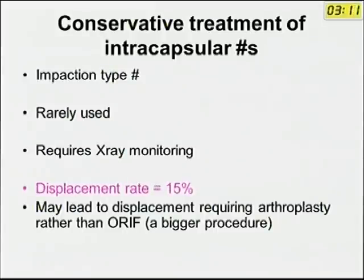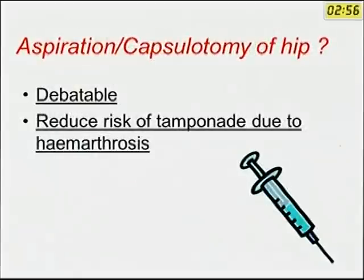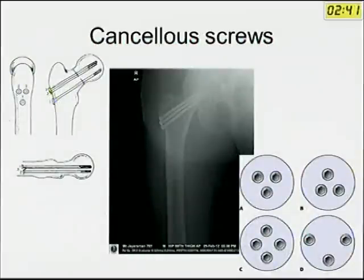Regarding conservative treatment of intracapsular fractures, nowadays it is better not to go for conservative measures. Though rarely used, the displacement rate even in impacted fractures has been 15%. As for aspiration or capsulotomy of the hip, some schools say capsulotomy may reduce the risk of tamponade, but this is still debatable. Regarding cancellous screw fixation, screws should be in a triangular pattern and a divergent configuration is much better, placed in a parallel way.